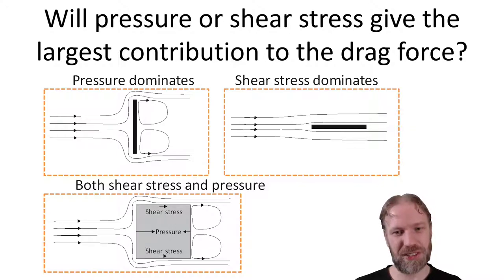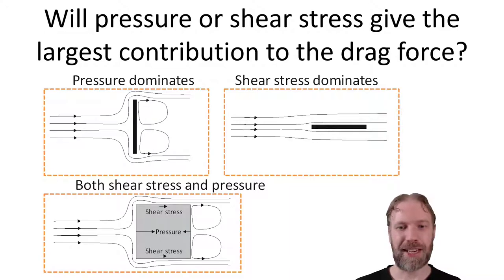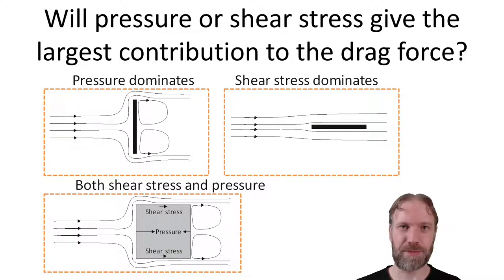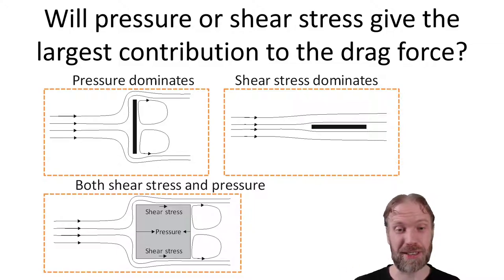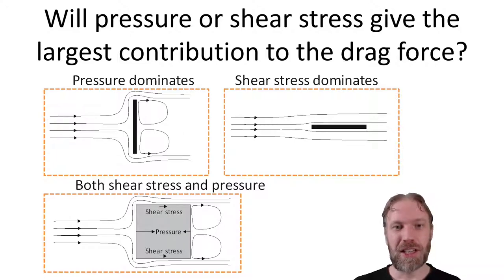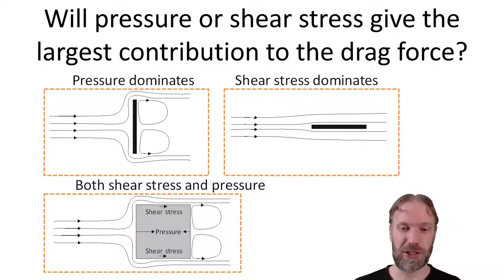For most objects, pressure will give a much larger contribution than shear stress. What determines the pressure is mainly the shape of the object. Therefore, drag from pressure is also called form drag, because it depends on the form of the object. Drag from shear stress is sometimes called viscous drag or friction drag, because it's caused by friction forces.